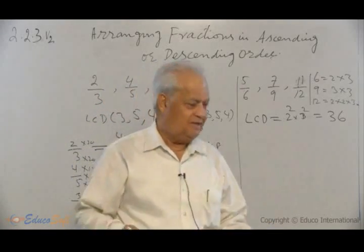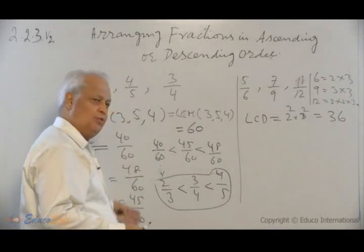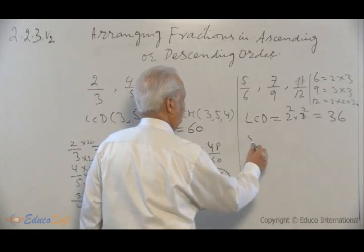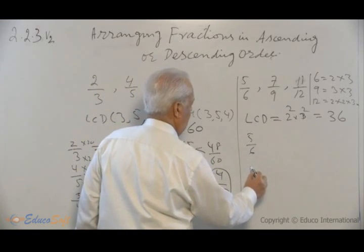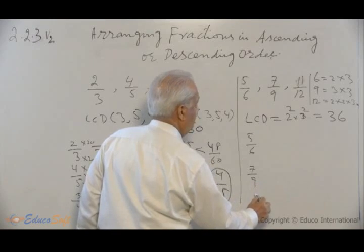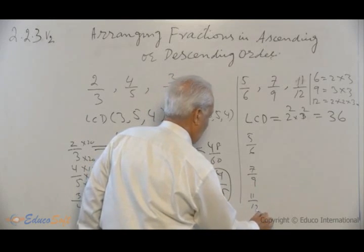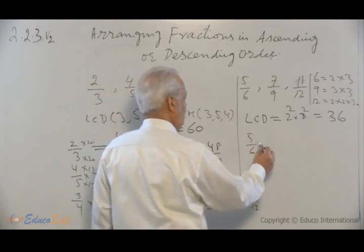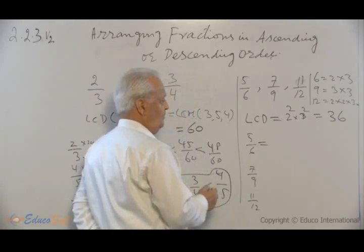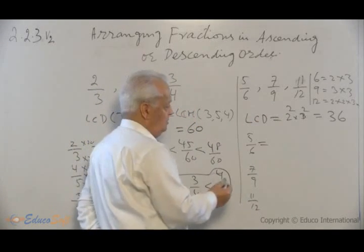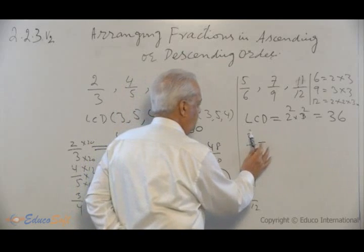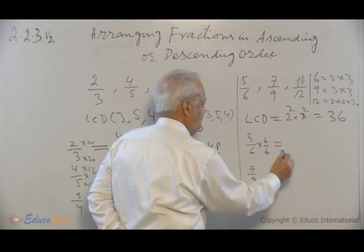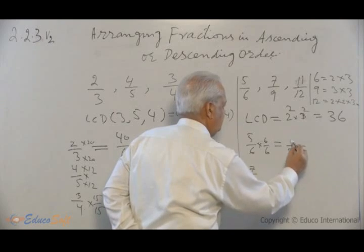Once you find the LCD, then we follow the same process. You will have 5 over 6, 7 over 9, and 11 over 12. Convert each one of these fractions into equivalent fractions. Denominator is 36. 6 times what? You multiply 6 times 6 over 6, so that will give you 30 over 36.